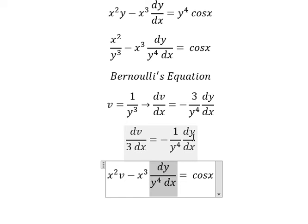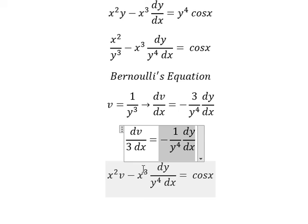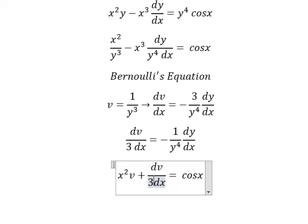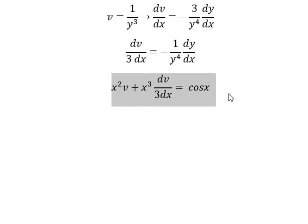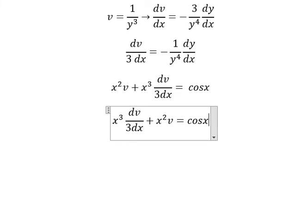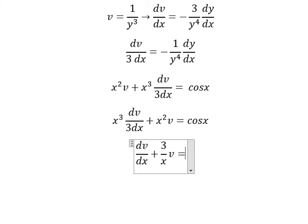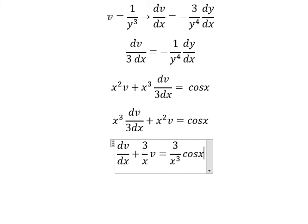This one in here with the negative, we will change for dv over 3 dx. Next, I will arrange a little bit. Then we divide both sides by x to the power of 3 and number 3. We have the original function and the first derivative of the function.